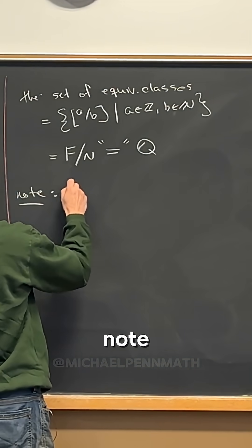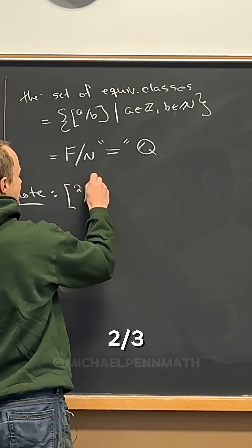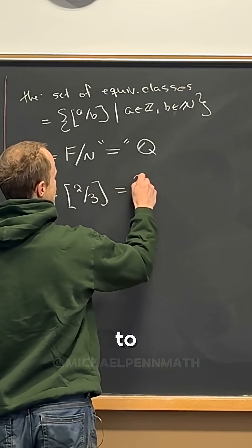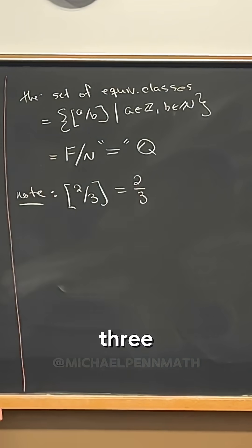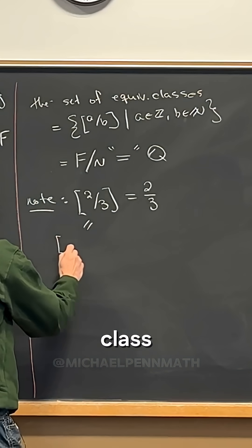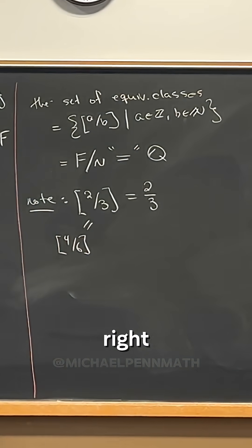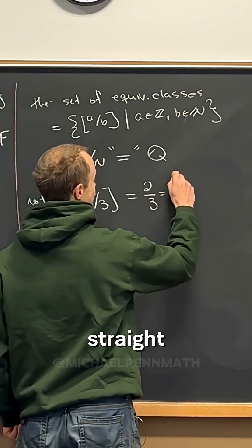Note that the equivalence class of, for instance, two-thirds is equal to two over three, because this equivalence class is equal to the equivalence class of four-sixths. But two-thirds is just straight up equal to four-sixths.